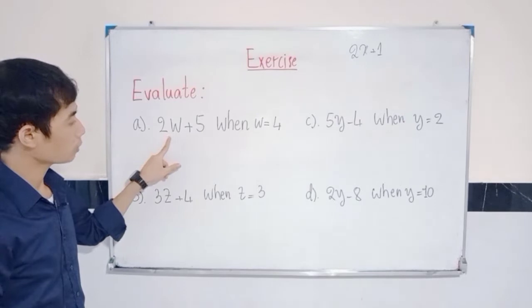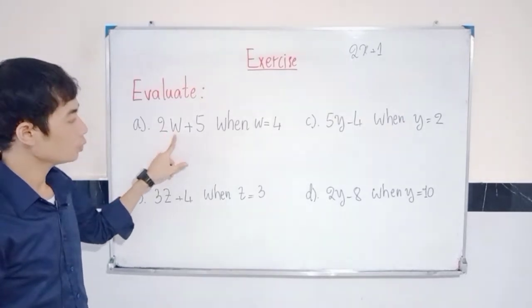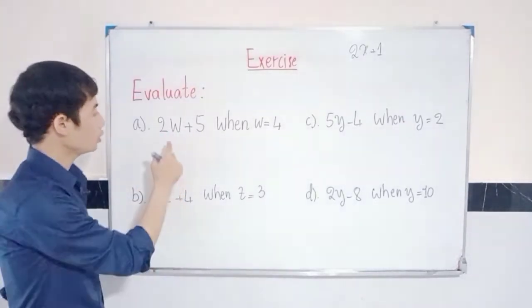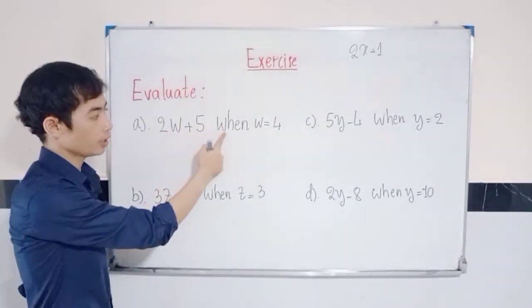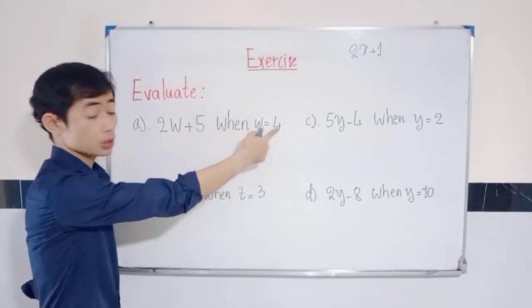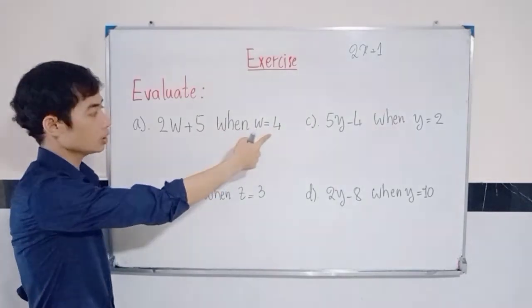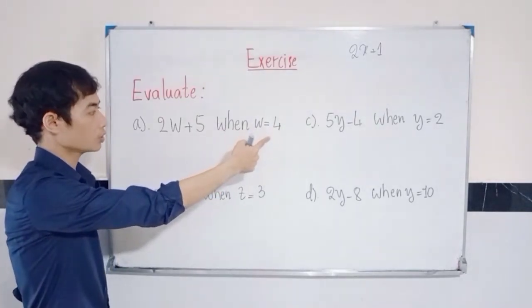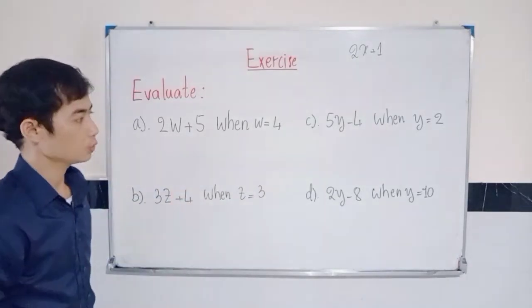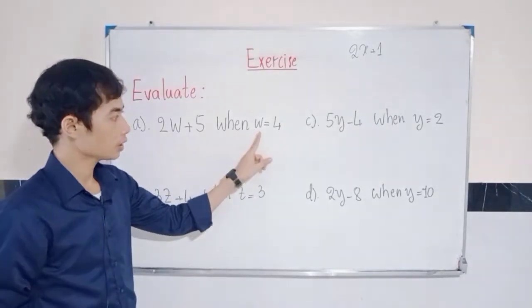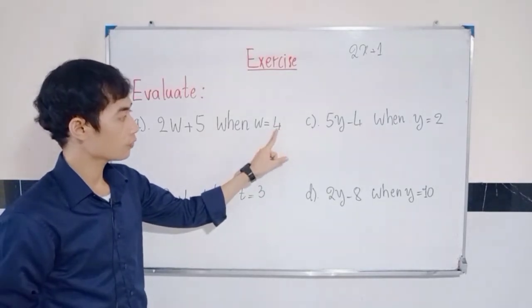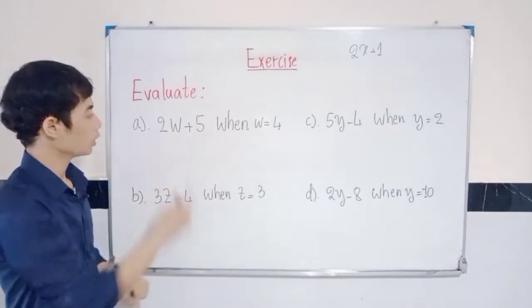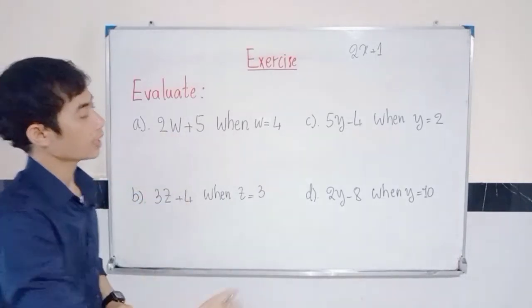We have question A: the expression 2w plus 5. What does that mean? You can say 2 times w plus 5 when w is equal to 4. So first, you need to understand how to substitute the value. When w is equal to 4, you can use 4 instead of w.